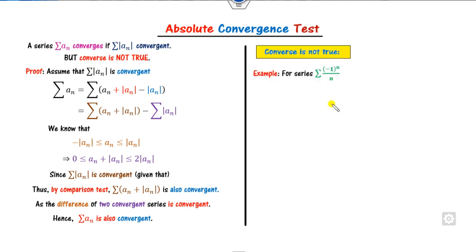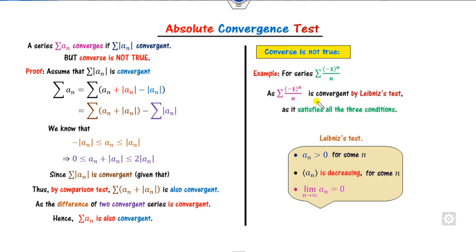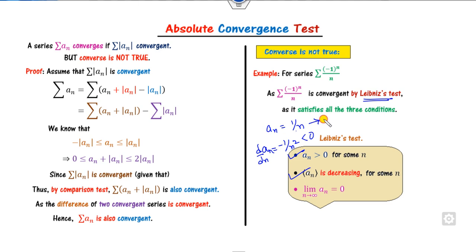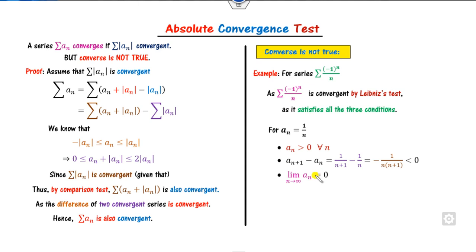Remember, the converse is not true. This is shown by the same example: the alternating series Σ(-1)^n/n is convergent by the Leibniz test — aₙ = 1/n is greater than 0, it is decreasing (derivative is -1/n² < 0), and the limit goes to 0 as n approaches infinity. But the absolute value Σ1/n is divergent by the p-test. So convergence does not imply absolute convergence.